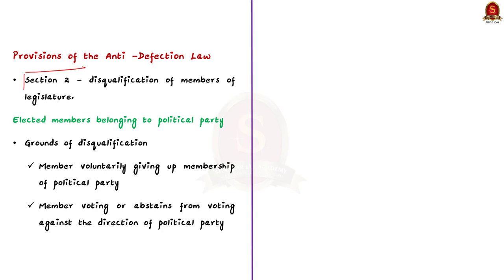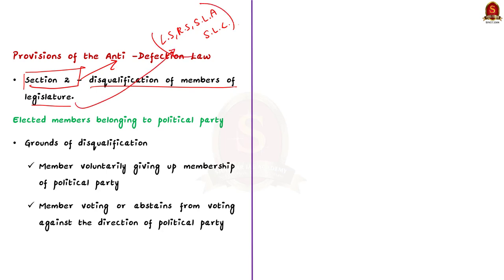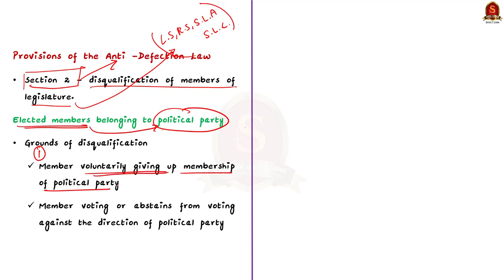Section 2 of the anti-defection law provides for the disqualification of members of the legislature. The term legislature includes Lok Sabha, Rajya Sabha, State Legislative Assembly and the State Legislative Council. There are two situations where an elected member who belongs to a political party can be disqualified: first, if the member voluntarily gives up the membership of the political party, then he or she is disqualified.